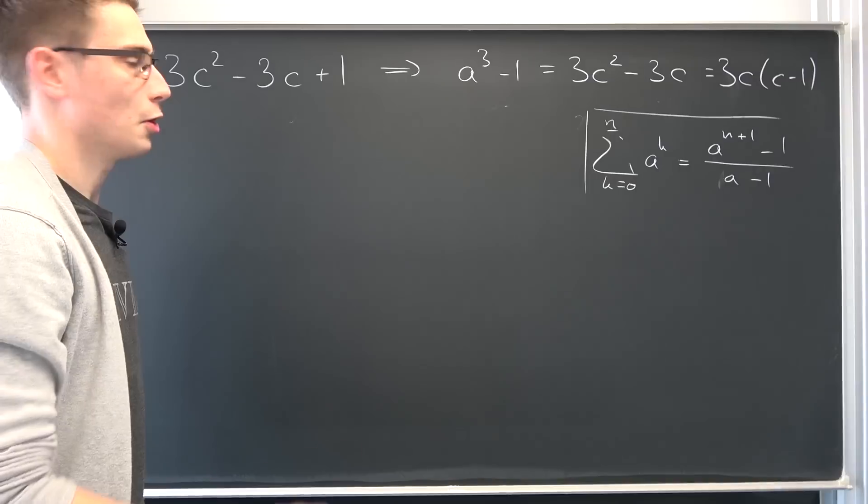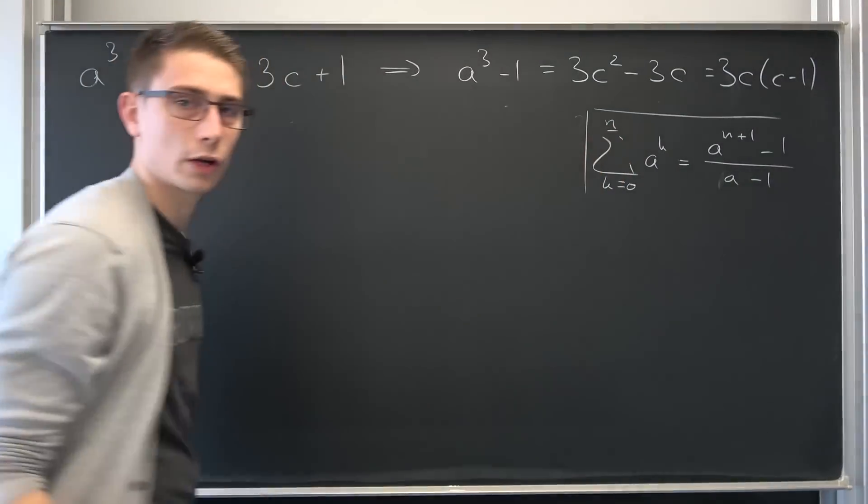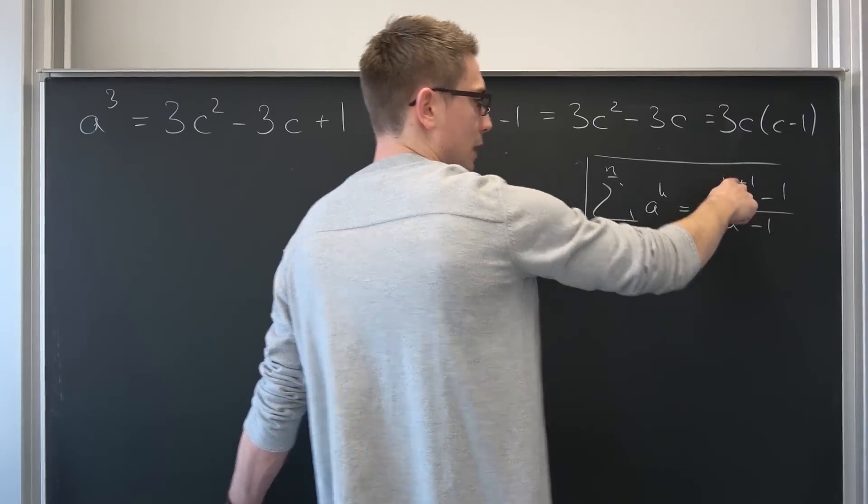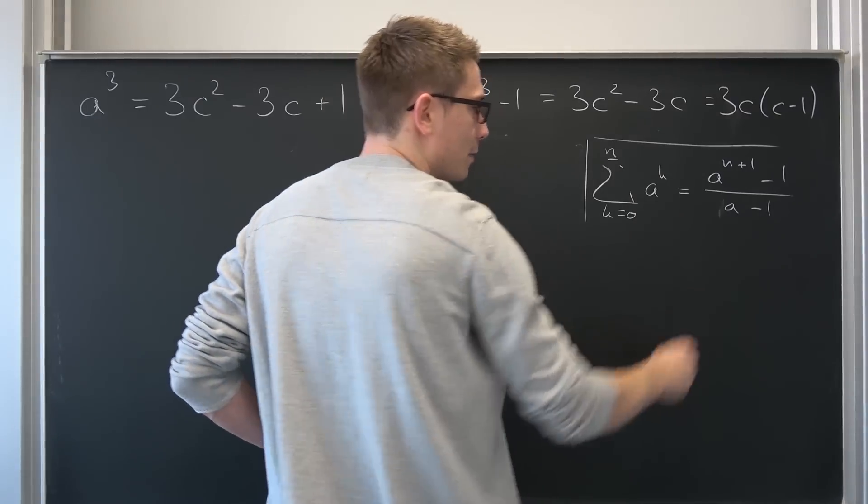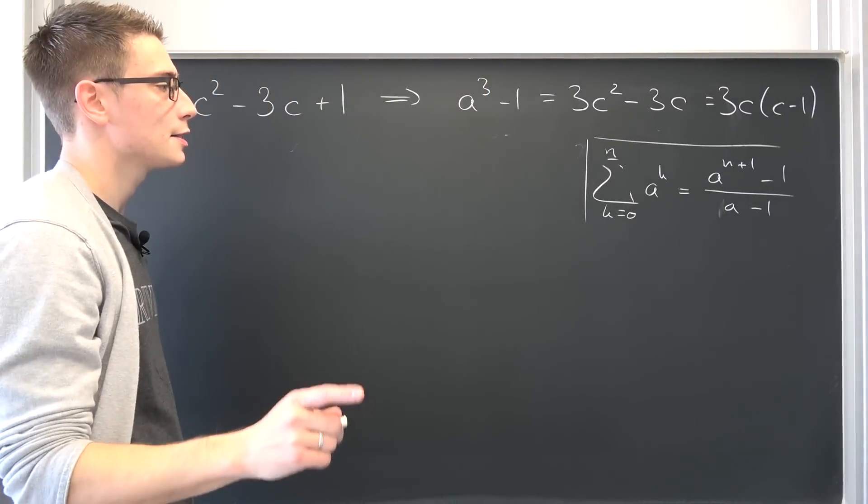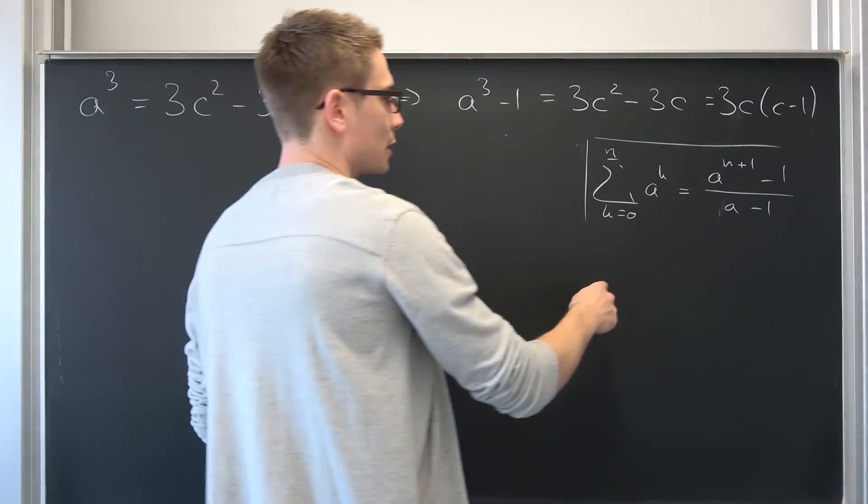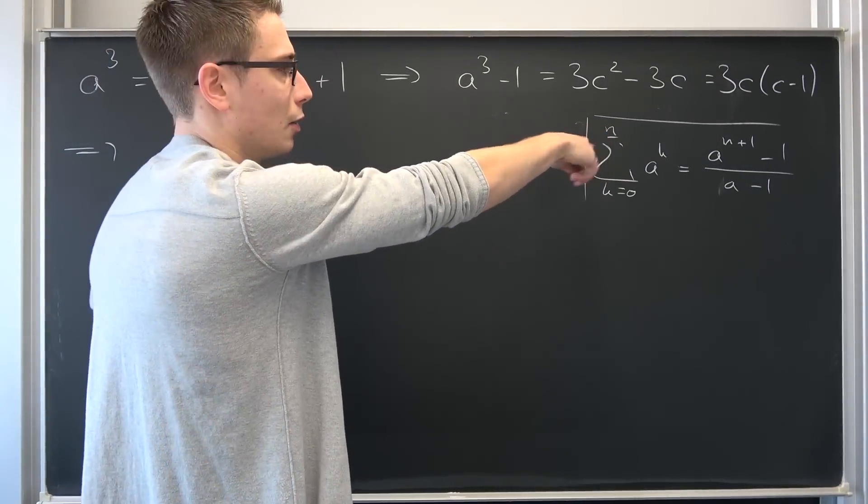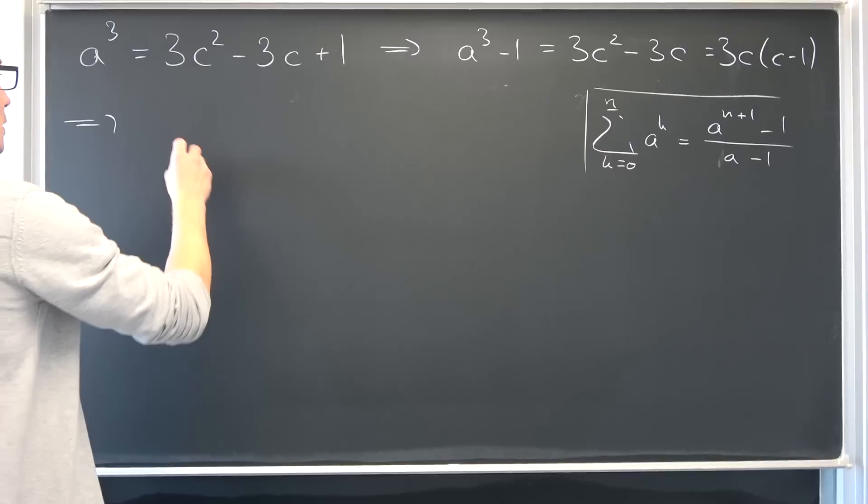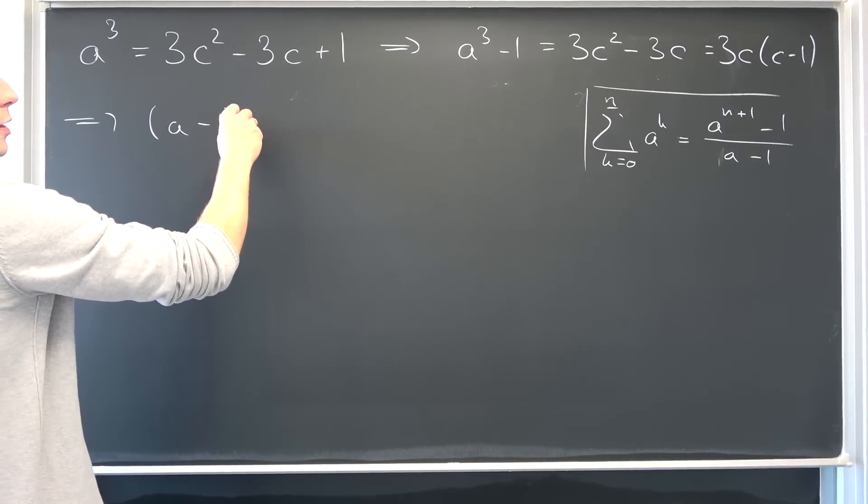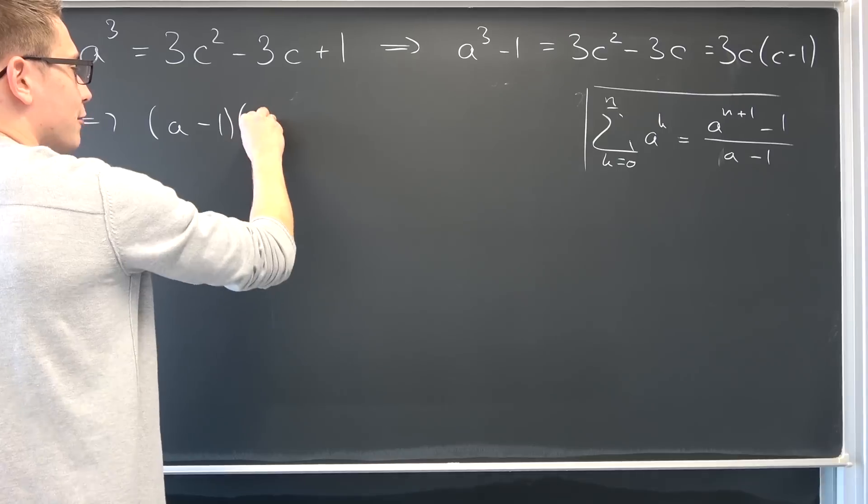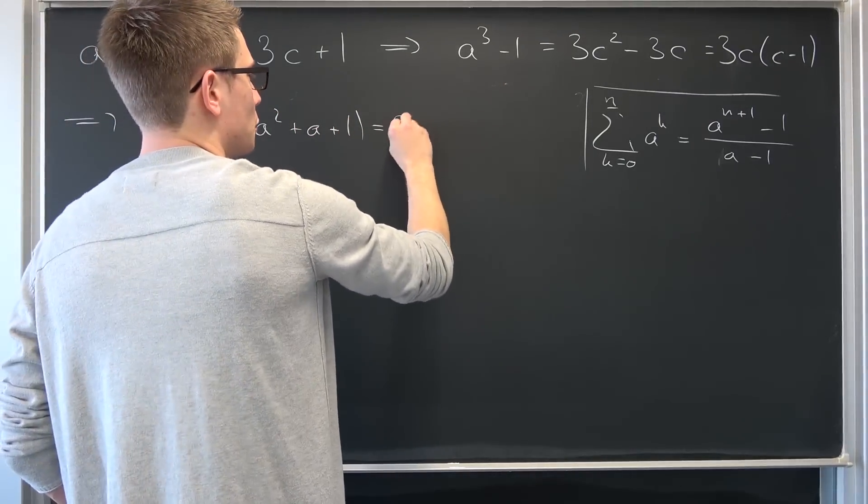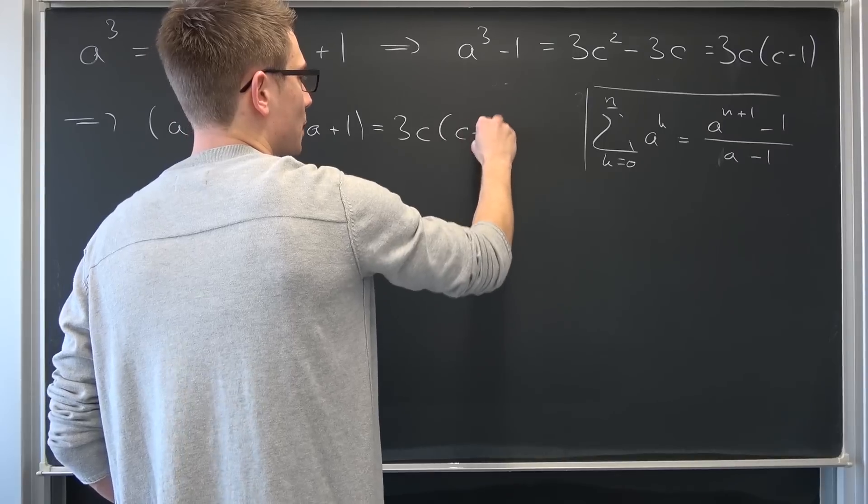This should be right. Notice that our n is 2, okay, because we have a to the third power minus one, so to get to the third power. Meaning if we multiply both sides by a minus one, we are going to talk about the roots in a minute. We are going to actually end up with this expression, okay, by just writing out the summation of the geometric progression. We are going to have a minus one times a squared plus a plus one, being thus equal to three c times c minus one.